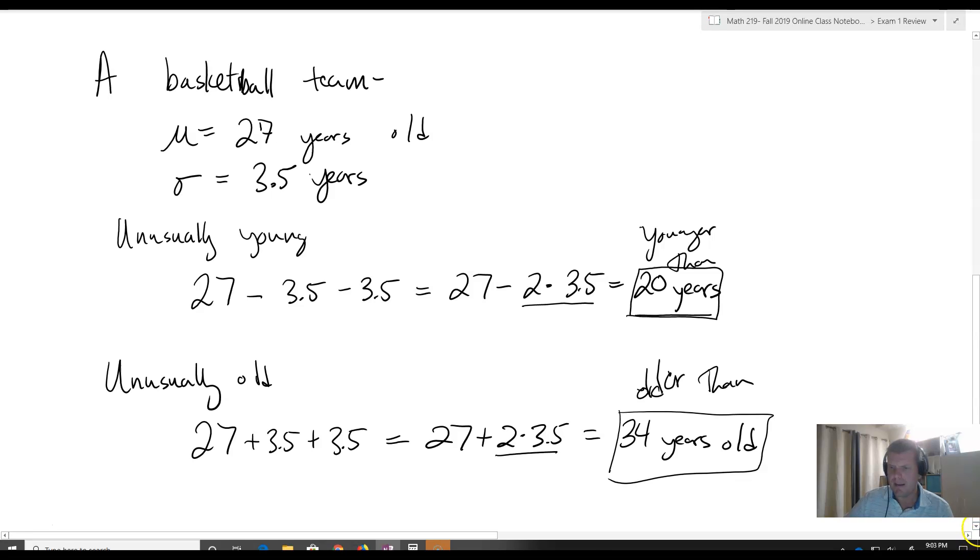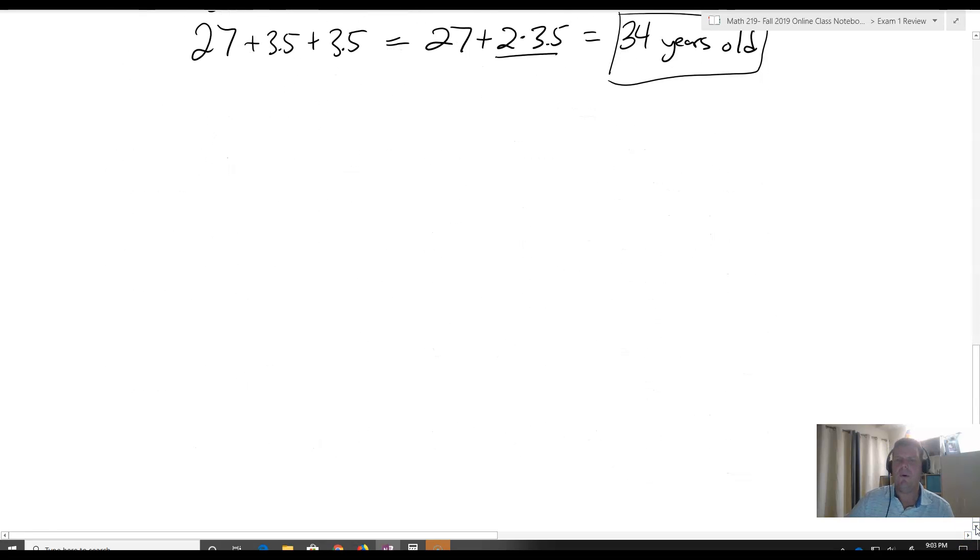Let's give another example. Suppose we wanted to talk about test scores. The average test score was 65, and we had a standard deviation sigma of seven points.